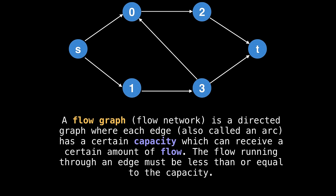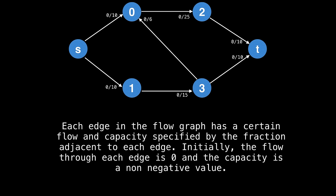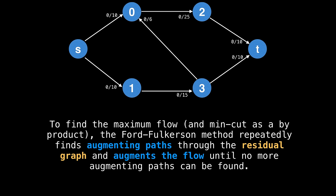So this is why we don't allow more flow than each edge. Each edge in the flow graph has a certain flow and capacity specified by the two values separated by a slash adjacent to each edge. Originally, the flow through each edge is zero and the capacity is a non negative value. To find the maximum flow and also the min cut as a byproduct, the Ford Fulkerson method repeatedly finds augmenting paths through the residual graph and augments the flow until no more augmenting paths can be found.